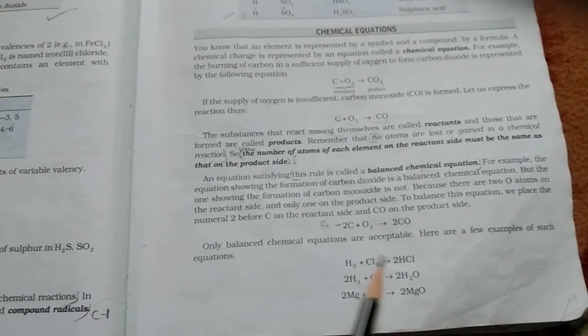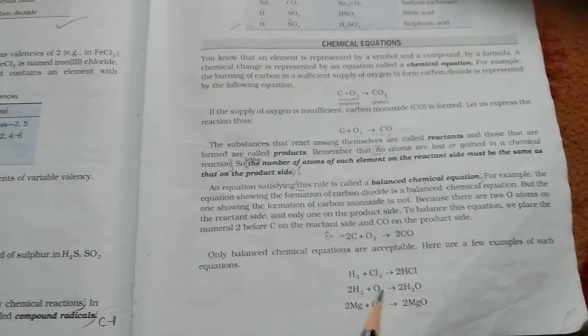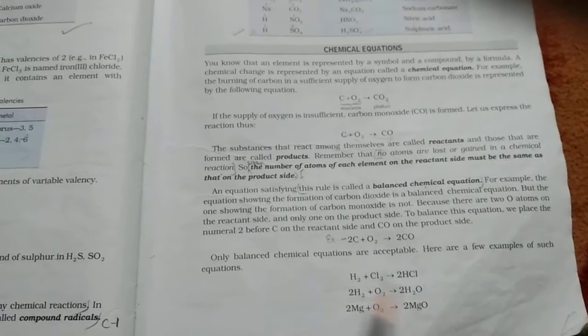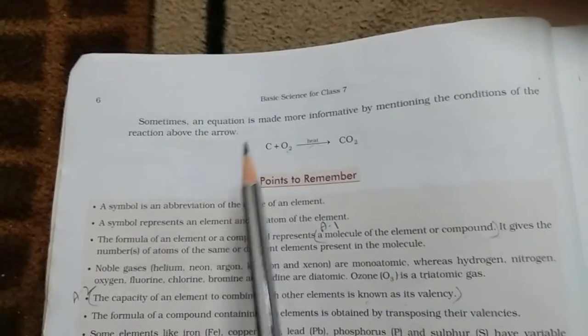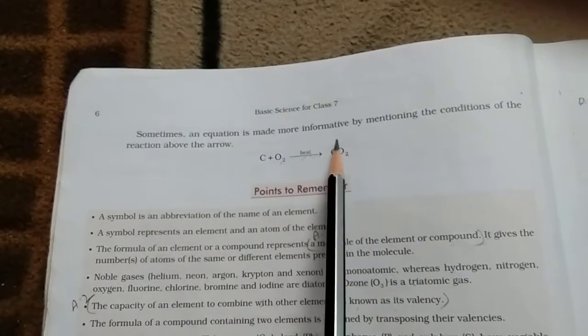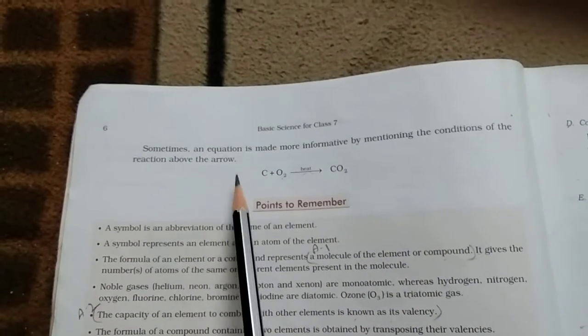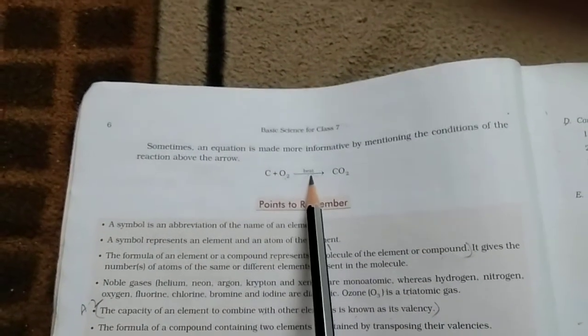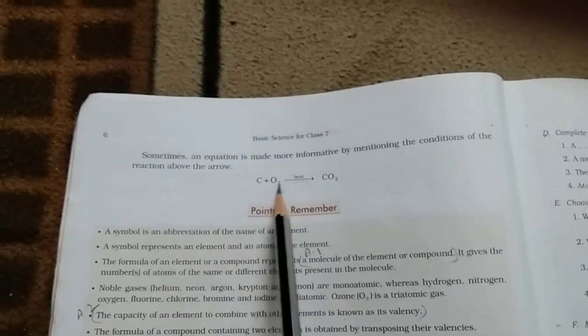H2 plus Cl2 is equal to 2HCl. 2H2 plus O2 is equal to 2H2O. 2Mg plus O2 is equal to 2MgO. Sometimes, an equation is made more informative by mentioning the condition of the reaction above the arrow. Like, in this, this is showing, we heat carbon with oxygen.